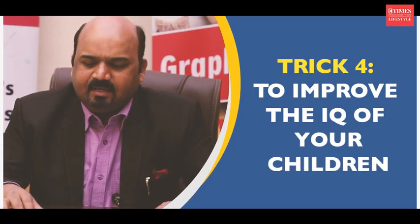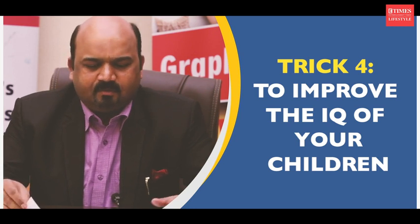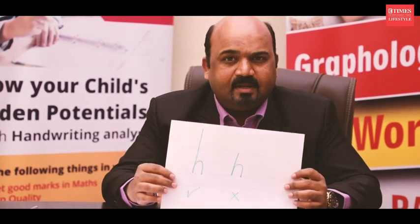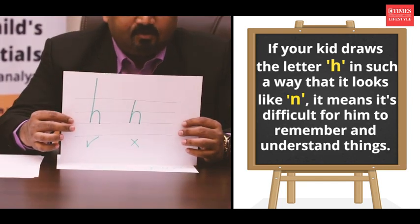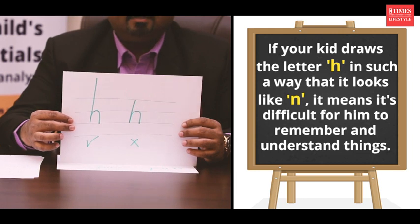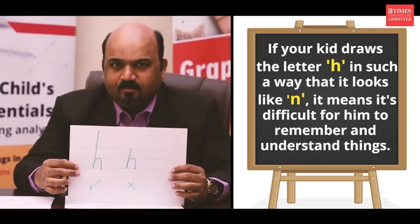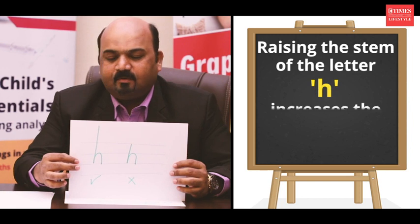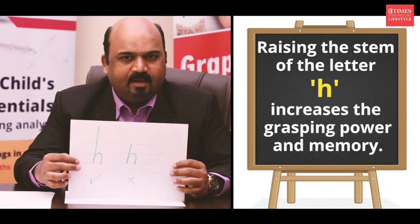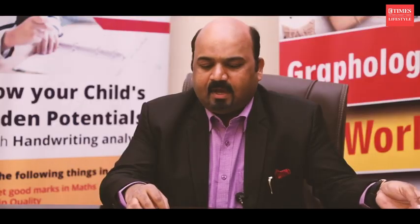The fourth trait is memory and intellect. A common complaint is that the child works hard but doesn't remember — he has to read something ten times to retain it. For sharp intellect and memory, look at the letter 'h'. In children the 'h' sometimes looks like an 'n', which means the person struggles to remember, understand concepts, or grasp things easily. But if you raise the stem of the 'h', your grasping ability and IQ will slowly increase, especially if you start early in life.